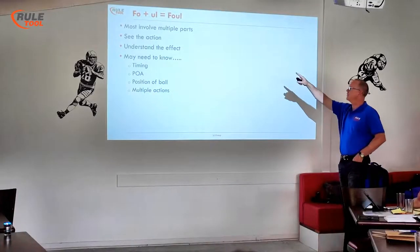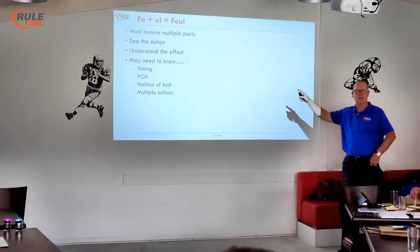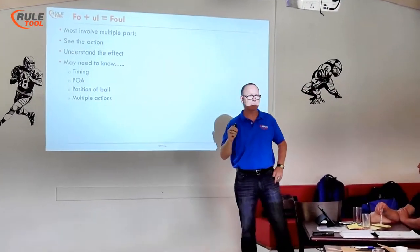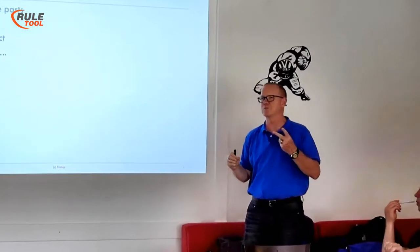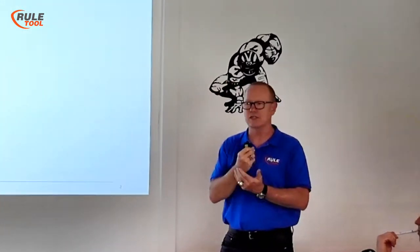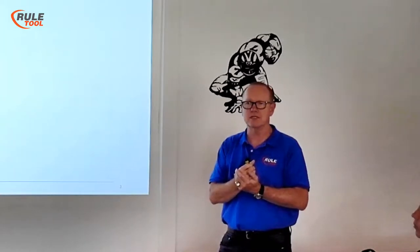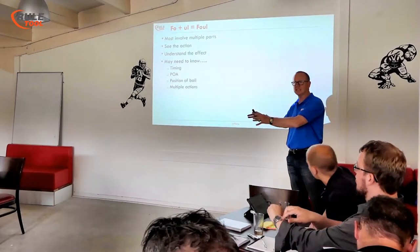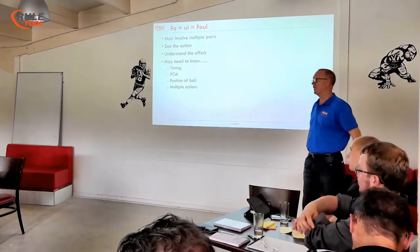I have up there at the top 'FO plus UL equals fouls,' and my reason for doing that is what we talked about a little bit sooner. A lot of these fouls are two parts: see the foul, see the action, decide if it's a penalty, decide if it's enough for a penalty, and then look and see if it has an advantage.